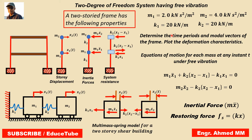Displacement at each floor level is considered as x1 and x2. Now, assuming the body in motion in the positive direction of x — we have to consider body in motion — and applying D'Alembert's equations, we get equations of motion for each mass at any instant t under free vibration as these two equations.